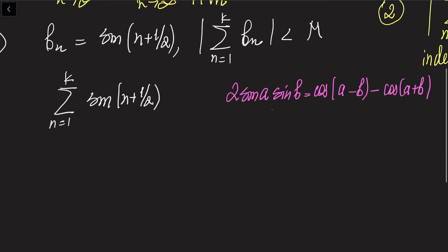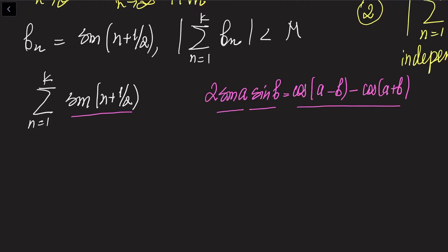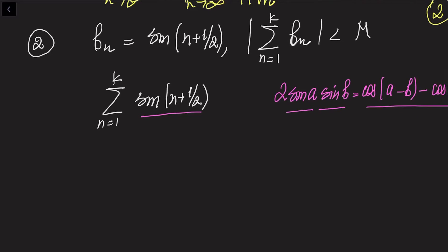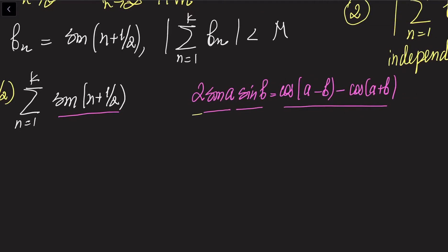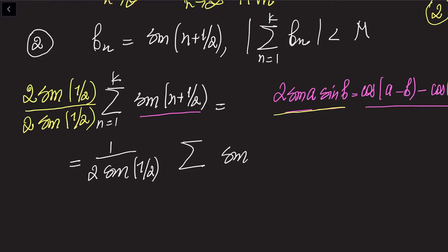In order to use this formula, we need to have two sines, but we have only one. So I am going to multiply artificially in order to use this formula. I am going to multiply the sum by sine of 1/2. So we have 2·sin(1/2) in the numerator, and divide by the same value sine of 1/2. So it is going to be 1 over (2·sin(1/2)) times the sum of sine of (n + 1/2) times sine of 1/2, when n goes from 1 to k.